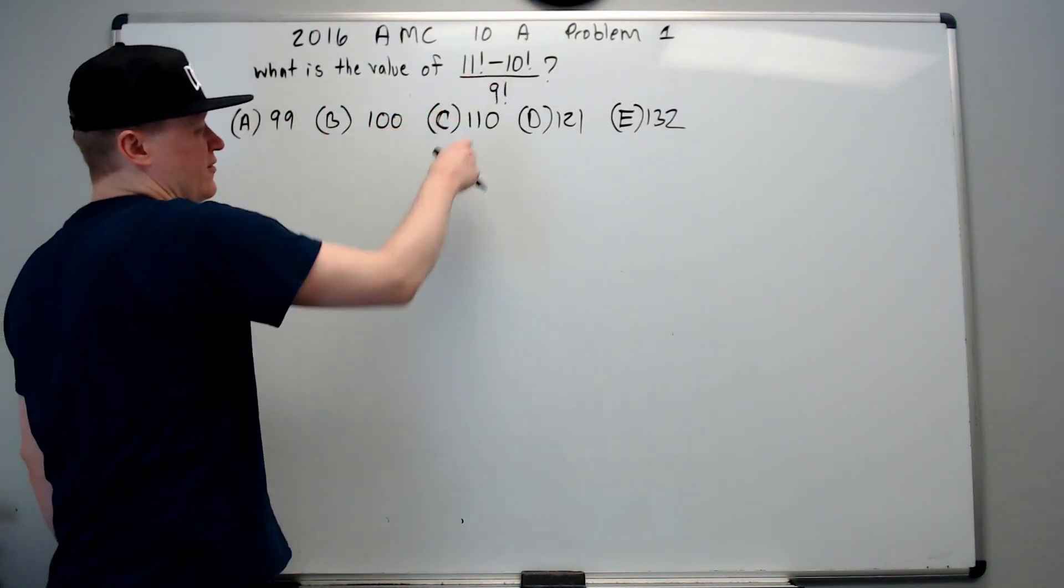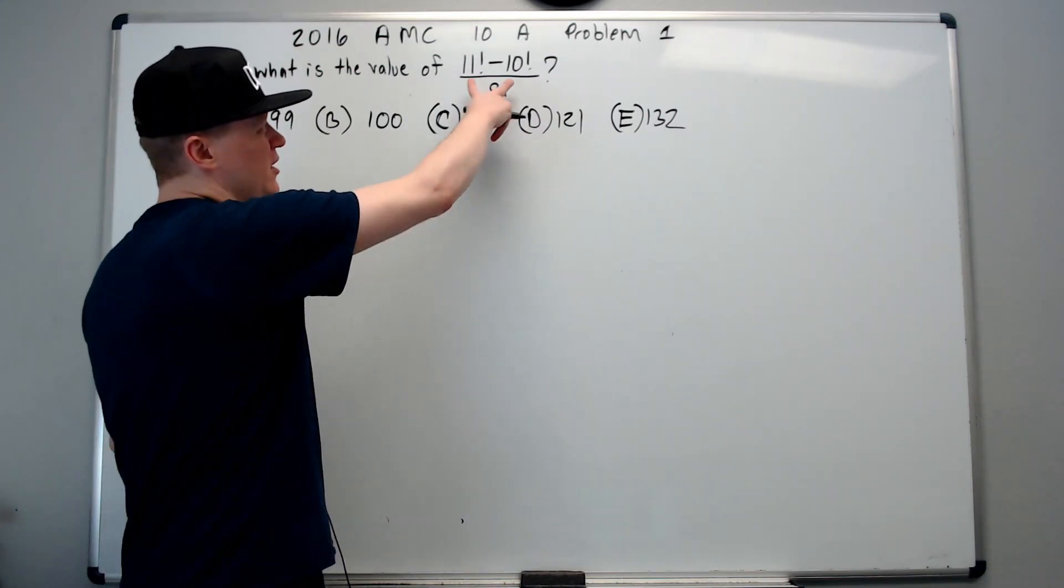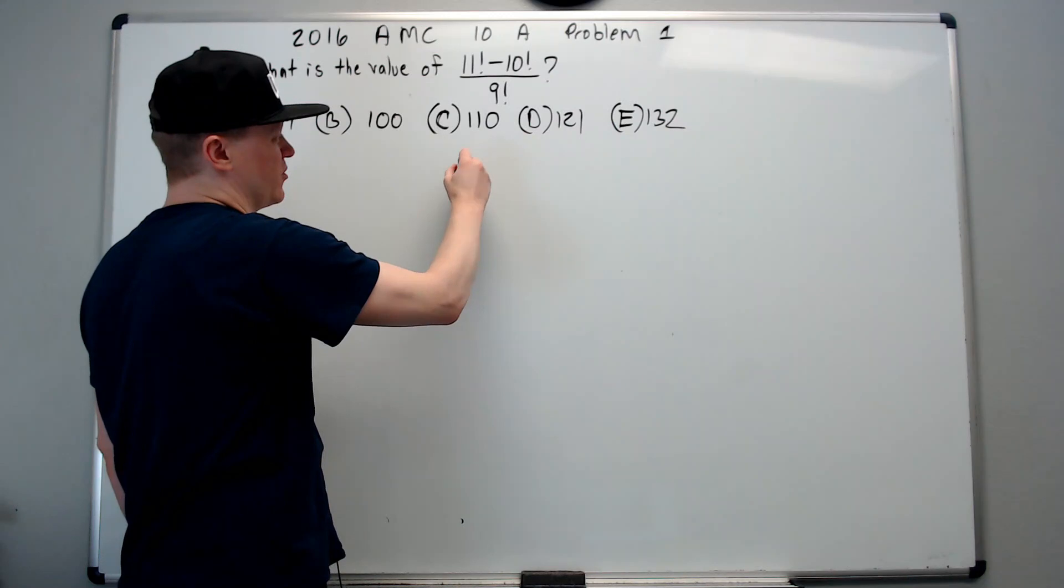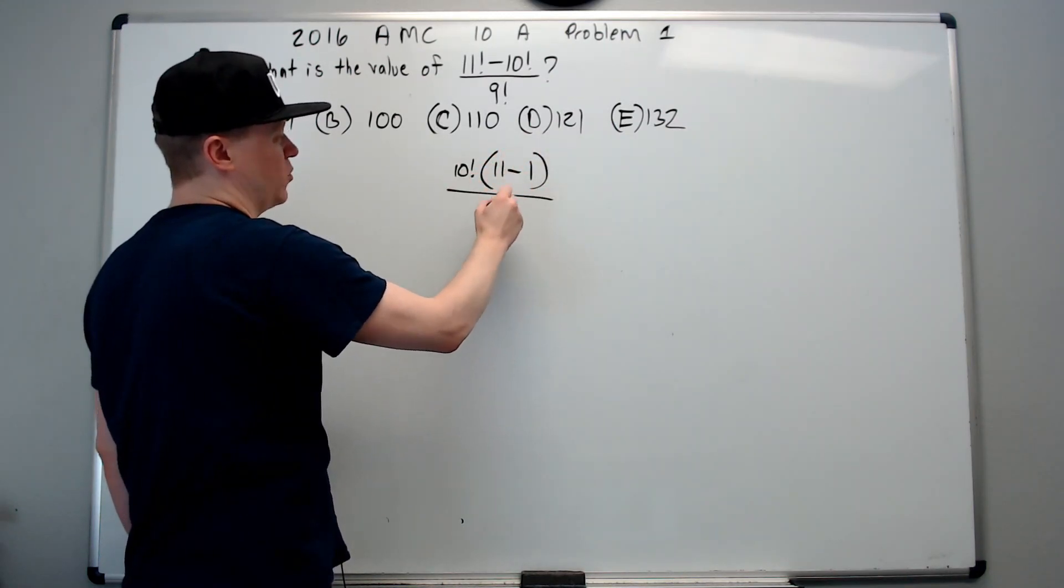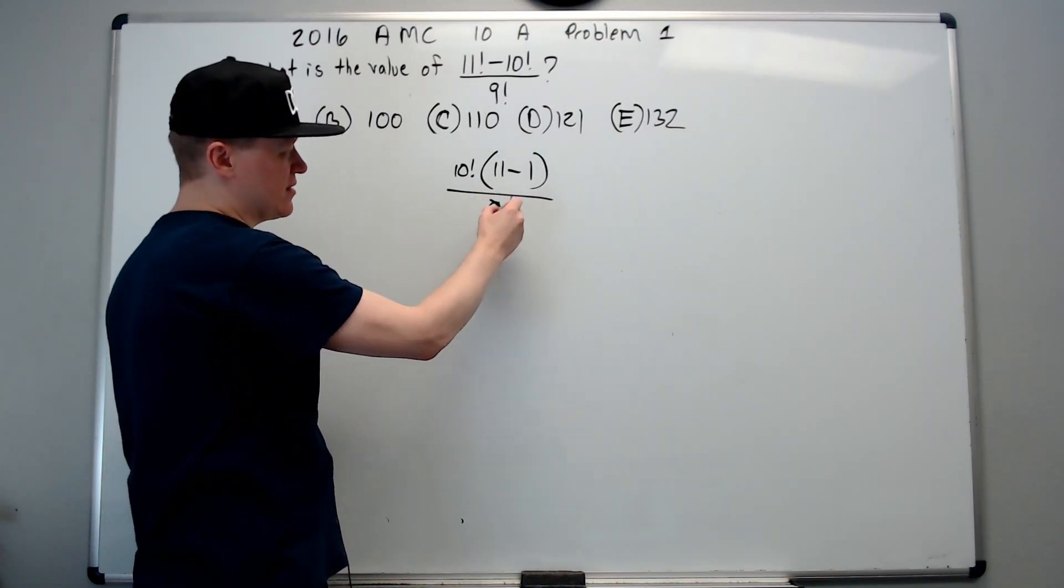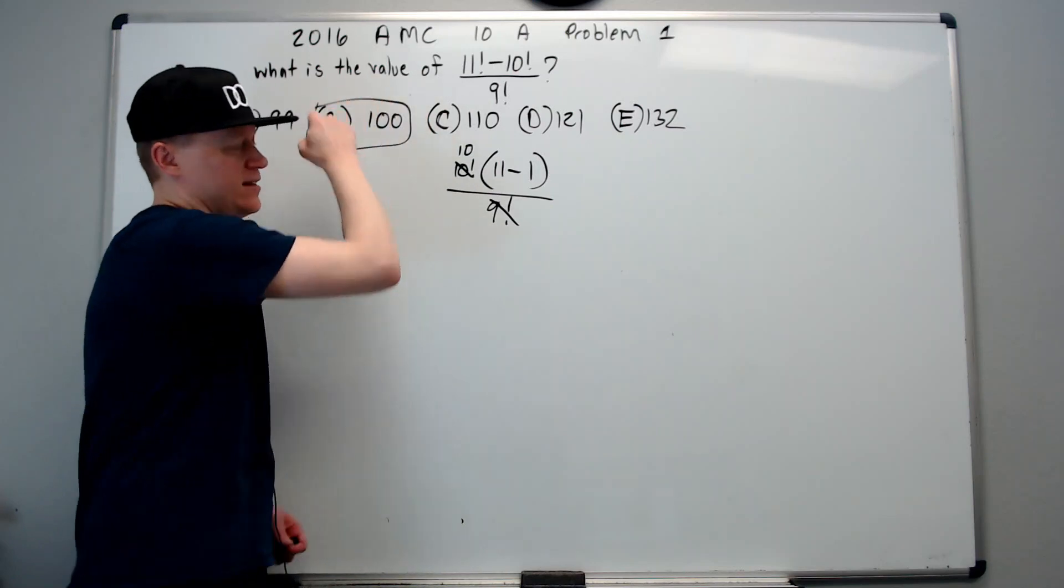What is the value of 11 factorial minus 10 factorial over 9 factorial? You should immediately think of factoring out a 10 factorial, leaving 11 minus 1 over 9 factorial. You should see that this cancels with this to leave a 10, and 10 times 10 is 100.